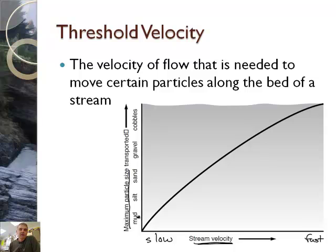And then we can have different sized particles. So mud, if it's going really slow, can be transported. Silt can be transported if it's going this speed. And then cobbles need a very, very fast stream to be transported down. So it depends on how fast your speed is. That's the threshold velocity.